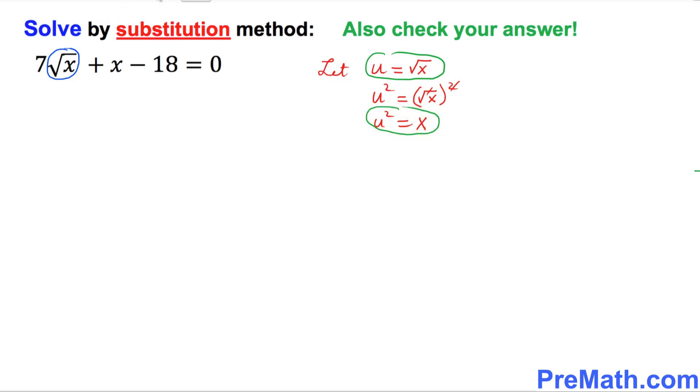Let's plug it back in this given equation and see what happens. So this simply is going to become 7 times, this becomes u plus x is u square minus 18 equal to 0.